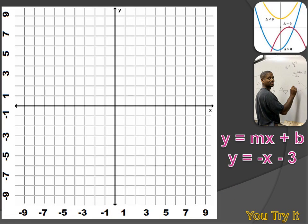Did you get it? Hopefully you remember that y equals mx plus b is the standard slope-intercept form, where m equals the slope and b equals the y-intercept. Our equation is y equals minus x minus 3. So what would b be — what would the y-intercept be? It would have to be minus 3. So we can identify one point on the line by identifying where the y-intercept is, at minus 3.